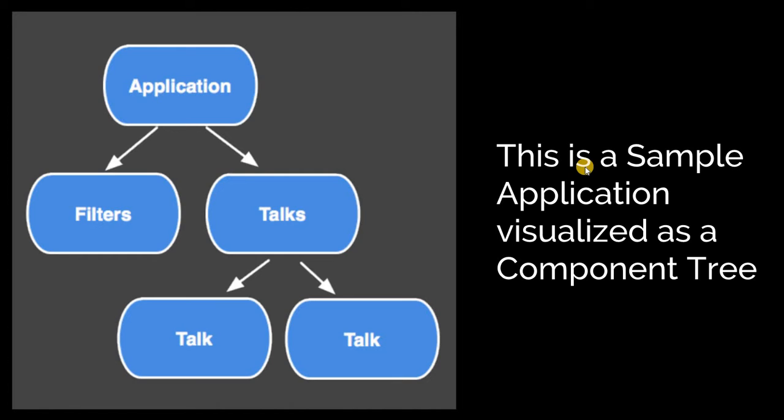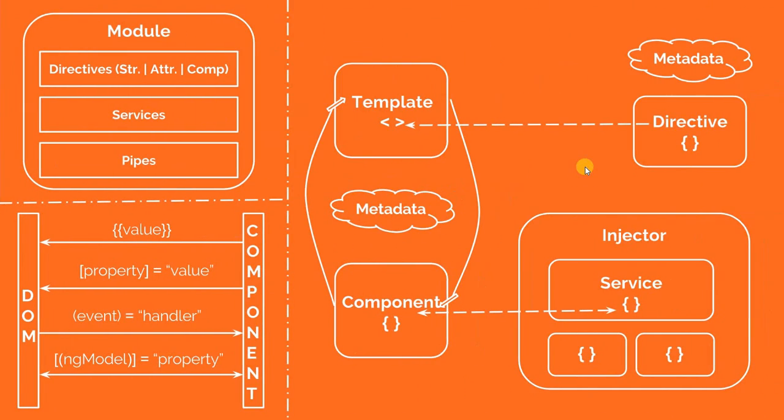And Talks would show you a list of talks, and then there would be child components inside the Talks component — one for each talk or list item in that list. So every Angular application can be visualized as a tree of components, and there are a lot of building blocks inside an Angular application.